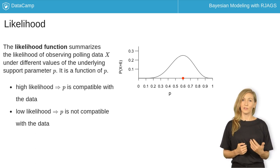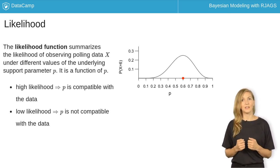In contrast, with low likelihoods, small values of support below 0.4 and large values of support above 0.8 are not compatible with the poll.